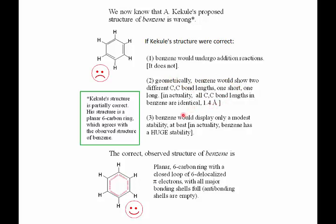If his structure were correct, benzene would show only a modest stability at best. In actuality, benzene has a huge stability. One thing we do have to acknowledge is that Kekulé's structure is partly correct — it's known that benzene is a planar six-carbon ring. That part, we could say, he got right.